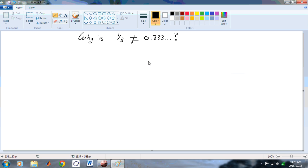And the first example that I'm going to focus on, in fact the only example, is the one in which we have a third not equal to 0.333 recurring.